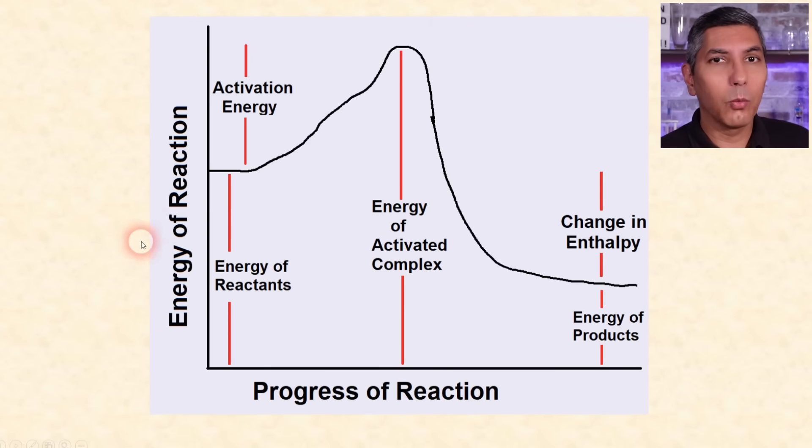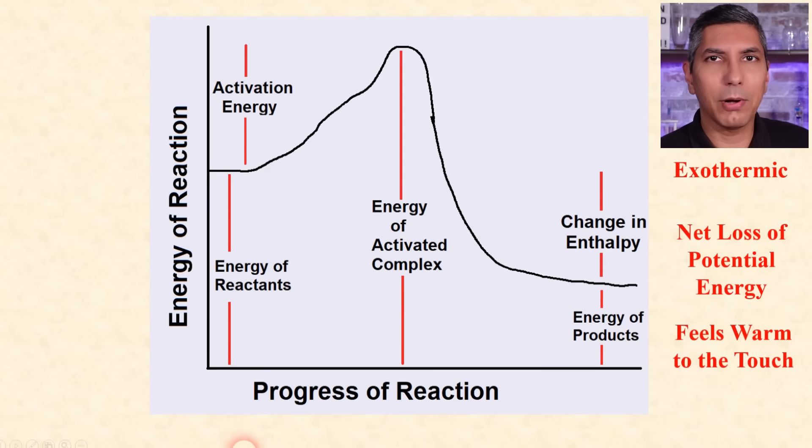Energy diagrams help us see how the energy of a reaction or a physical process changes from the reactants, when it attains its activation energy and gets to possibly a transition state or activated complex, then finally to the products. Notice that when a system has a net loss of potential energy to the surroundings, we have an exothermic process.